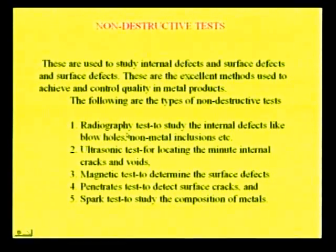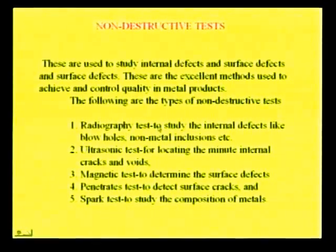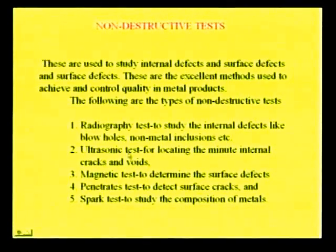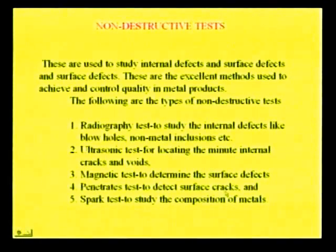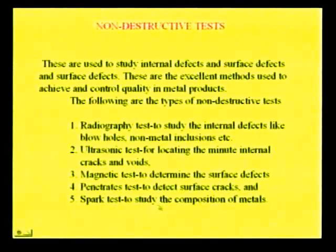The first non-destructive test is radiography. Radiography uses X-rays and gamma rays. The next one is the ultrasonic test, which uses ultrasonic waves. The magnetic test is used to determine surface defects. The penetrant test is used to detect surface cracks, and the spark test is used to study the composition of metals.